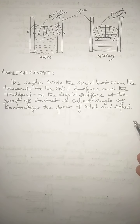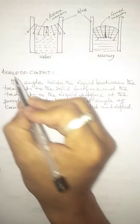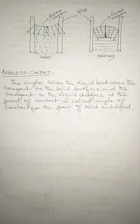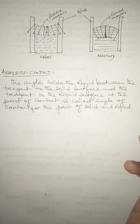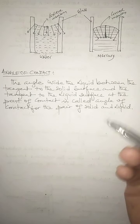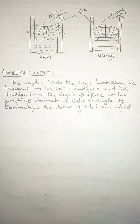We will go to the next topic now — an important topic, that is angle of contact. In the last video we learned in detail about the formation of convex and concave meniscus by liquids, that is mercury and water. Mercury and water can form a certain angle when placed in a capillary tube. But first, let's understand what the angle of contact actually is.